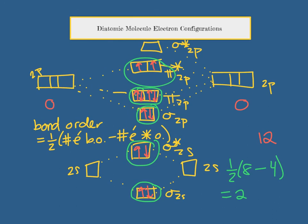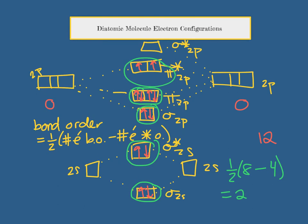So MO theory not only predicts how many bonds this molecule should have, but it also predicts the fact that oxygen is paramagnetic.